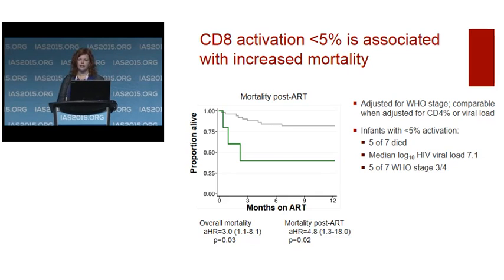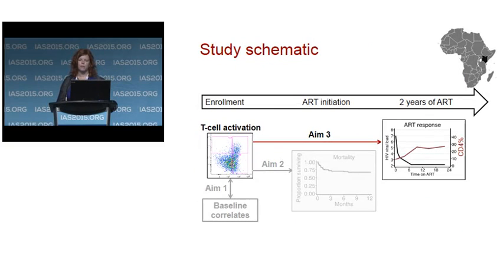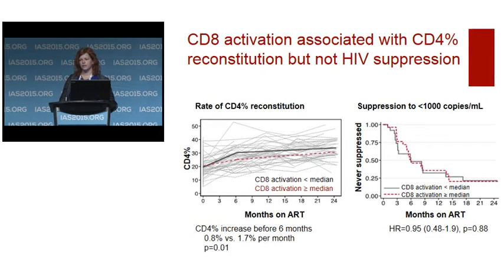Strengths of our study include a homogeneous infant population with a narrow age range and activation uniformly assessed before ART initiation. However, given the rapid and variable disease progression seen in infancy, there was still heterogeneity among subjects. We used both CD38 and HLADR to identify activated T cells and included other T cell phenotypic markers to confirm internal consistency. We did not have an immune exhaustion marker in our panel and unfortunately had no T cell function data. Because we have no longitudinal sampling prior to diagnosis and ART initiation, we cannot test whether these children previously had higher activation levels that had been lost by the time they were identified.